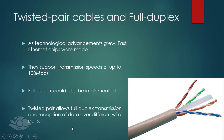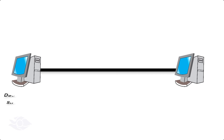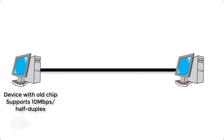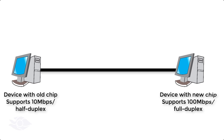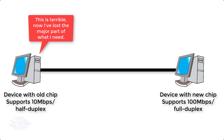However, one major problem devices encountered was incompatibility. If you connect two devices together such that one device was using the old chips that allow a 10 megabits per second transmission and the other device was using the new chip that supports 100 megabits per second speed, the device with the new chip will have no problem receiving data at 10 megabits per second, but the device with the old chip will be overloaded and could lose a great portion of the data that it receives. The auto-negotiation technology was designed to solve this problem.